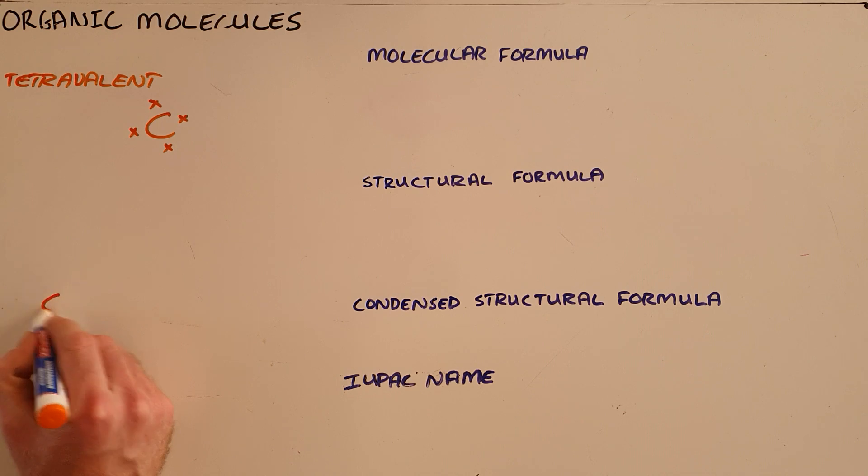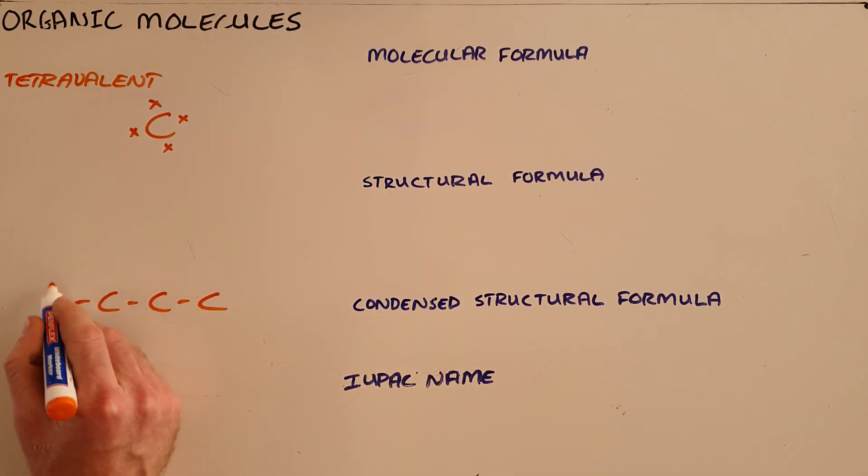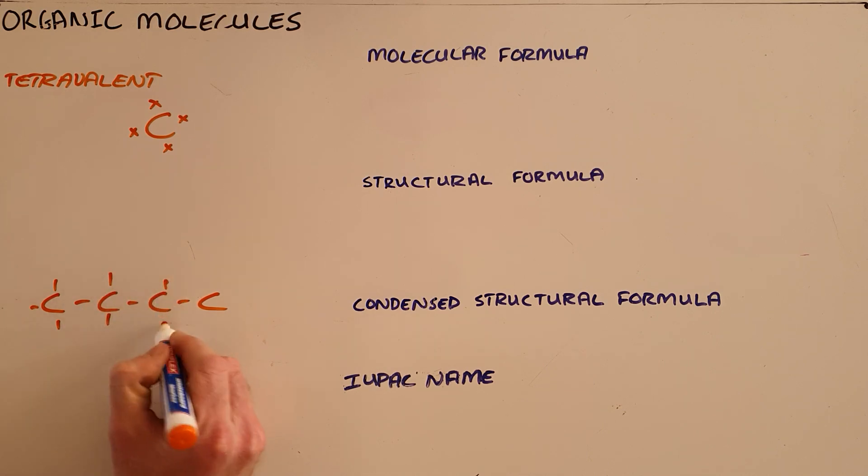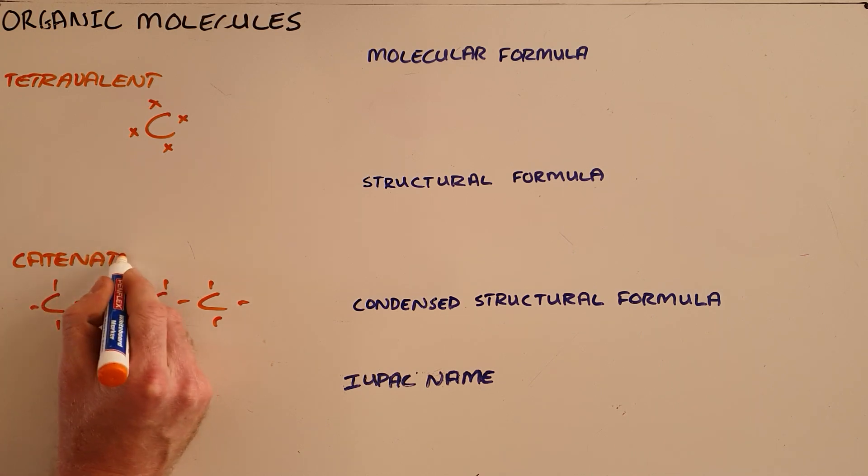What makes that unique is that carbon is able to bond with itself and form longer chains. We call that ability catenation - the ability to form long chains by bonding with oneself.